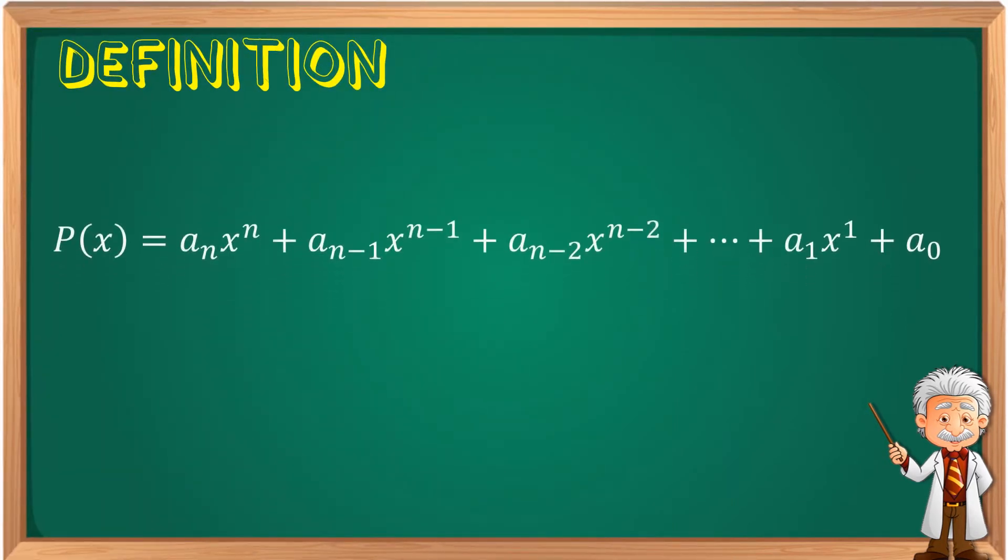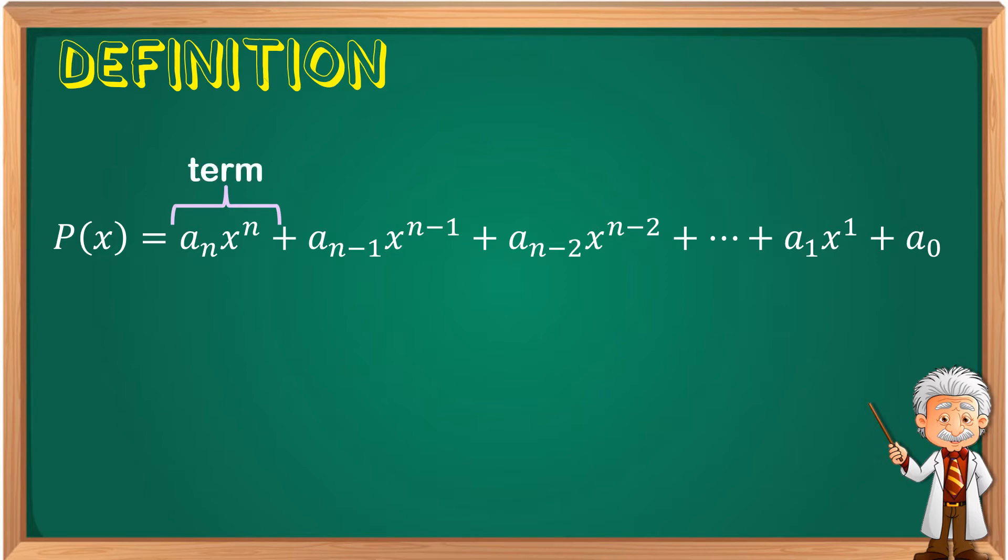From this definition, I am going to show you each term of the function. This is the first term. This is considered as a term. A term is separated by a plus or minus sign. So, this is also another term. And another term. Another term. And lastly, the constant term.